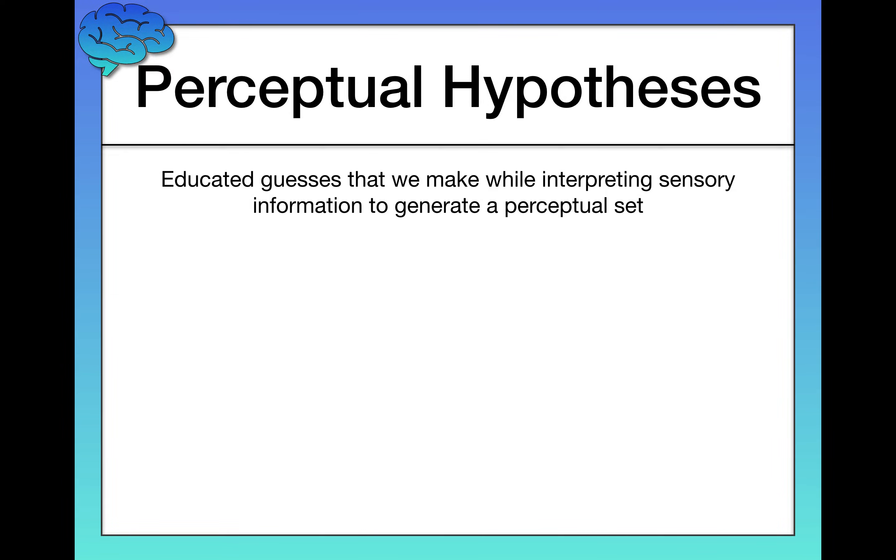This is an example also of what we call perceptual hypotheses. Perceptual hypotheses are simply educated guesses that we make while interpreting sensory information, which can often be ambiguous.